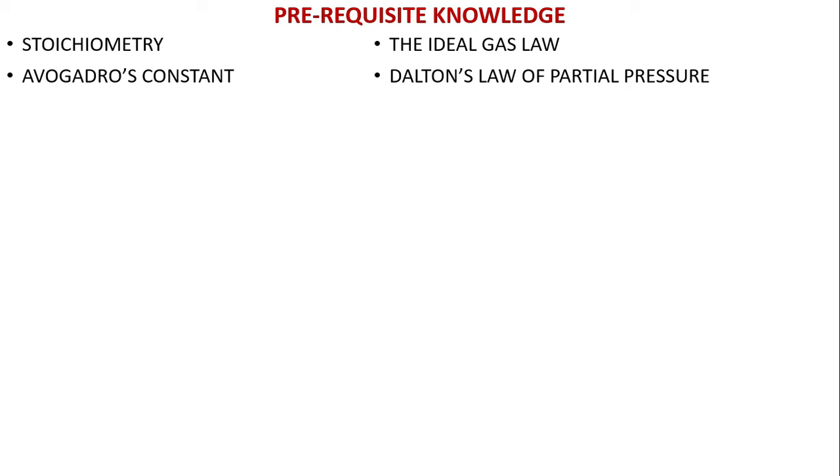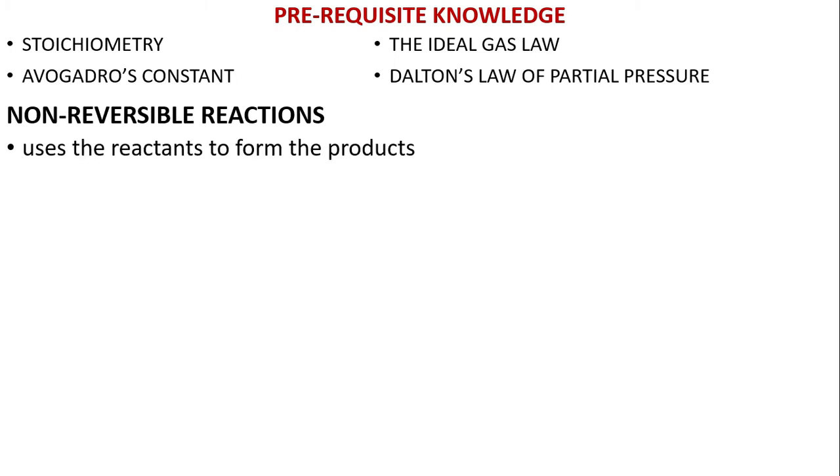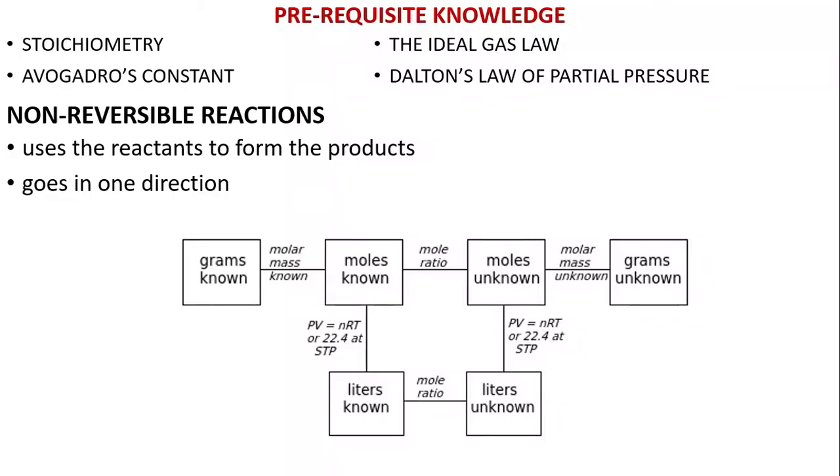Now there are two kinds of reactions: reversible and irreversible or non-reversible reactions. Let's talk about non-reversible reactions first. Non-reversible reactions use the reactants to form the products, meaning the reaction goes in one direction. We have established the molecular roadmap. If you're not familiar with that, please check the stoichiometry video. We're just going to change it a little bit.